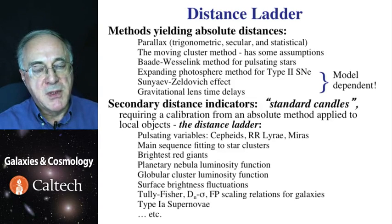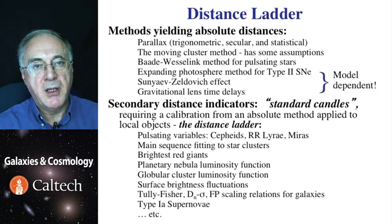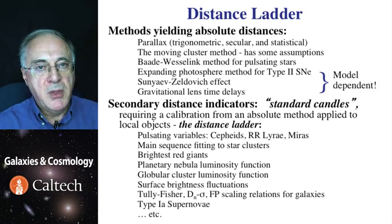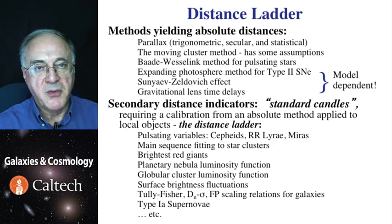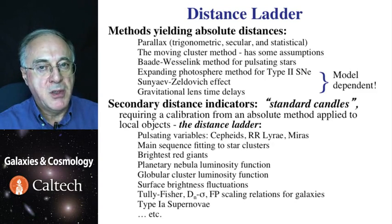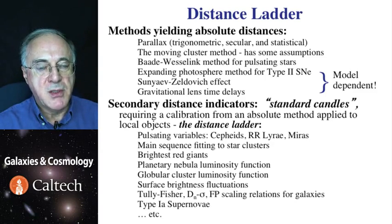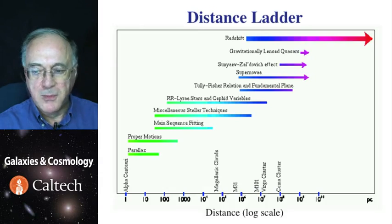The other kind of distance indicators are the secondary ones, which require calibration from somewhere else. They can be used to measure relative distances — fainter objects must be further away — but their zero point has to be obtained from something else. There are many of those, using both stars and galaxies.